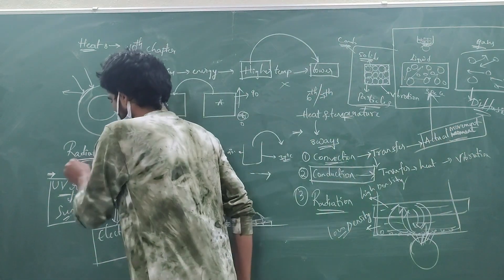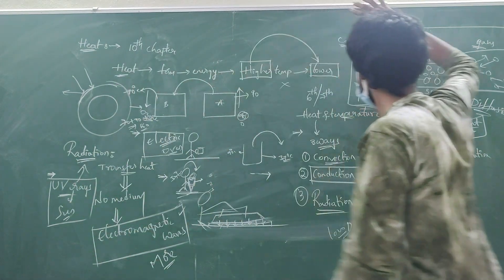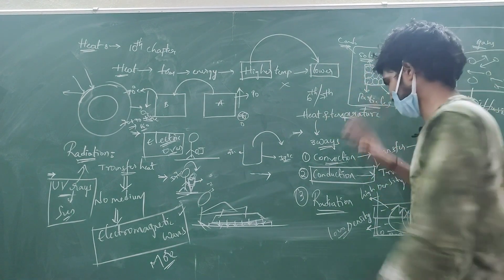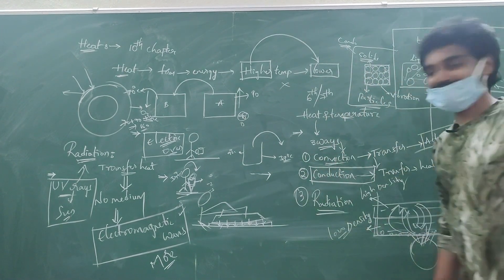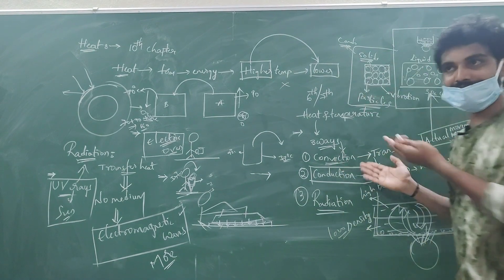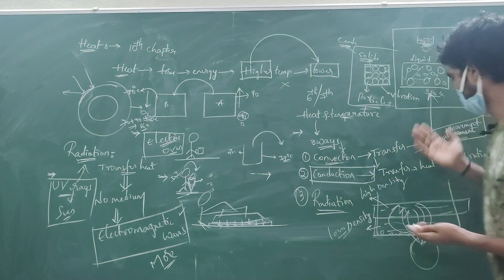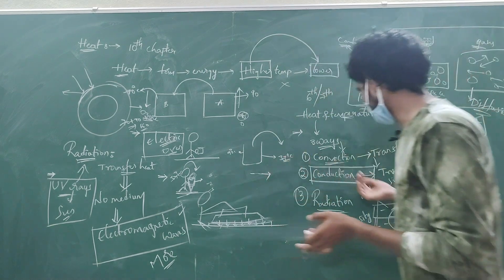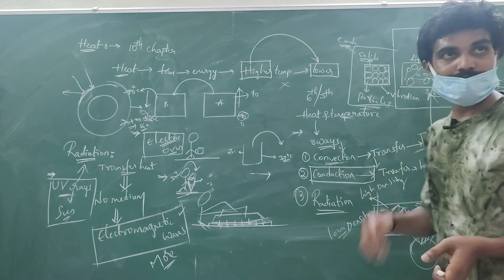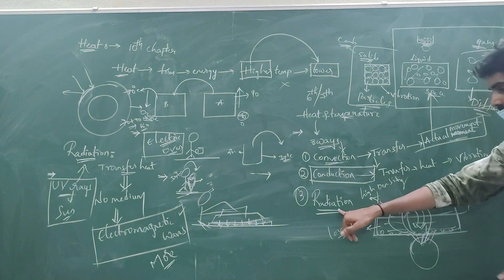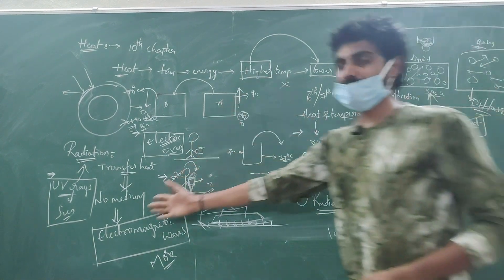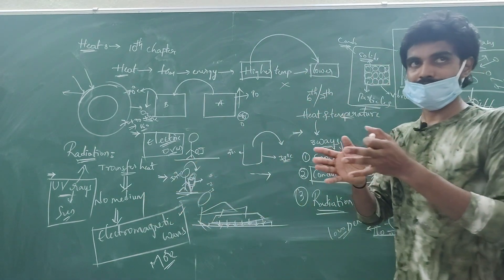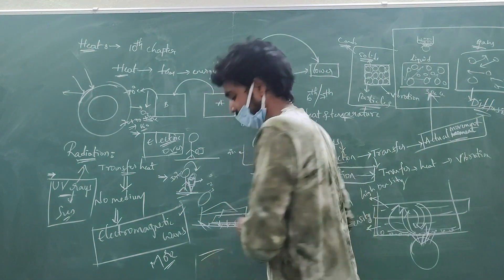Overall, we have three types of heat transfer: convection, conduction, and radiation. In convection, particles actually move. In conduction, particles vibrate but don't move. In radiation, heat energy is transferred by electromagnetic waves with no medium required. Thank you.